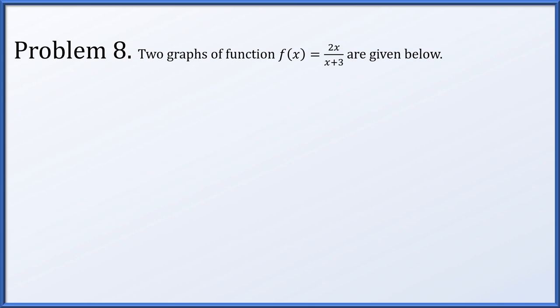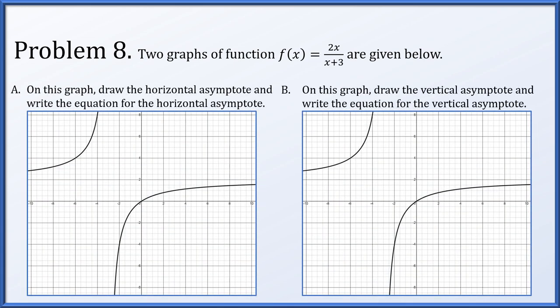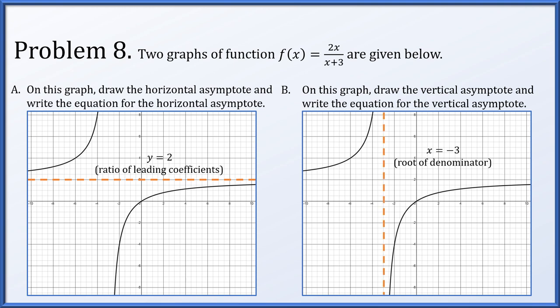Problem 8 is straightforward. We're given two graphs of f(x) = 2x/(x+3). On one, we draw the horizontal asymptote and write its equation; on the other, we draw the vertical asymptote and write its equation. Since numerator and denominator are both the same degree, the horizontal asymptote is the ratio of leading coefficients: y = 2. For the vertical asymptote, we find a root of the denominator: x = -3.